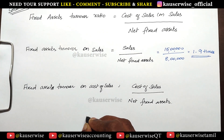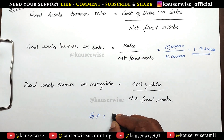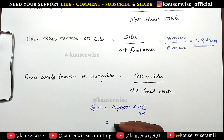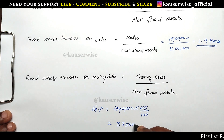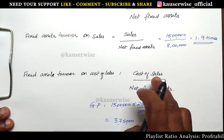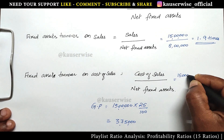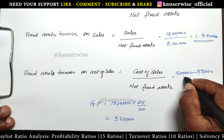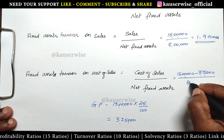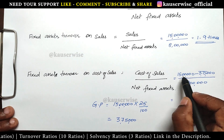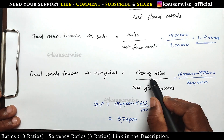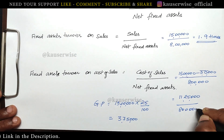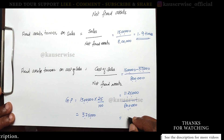Calculate gross profit: sales 15 lakhs multiplied by GP ratio 25% equals 3,75,000. This is the gross profit. Now: 15 lakhs minus 3,75,000 (GP) divided by net fixed asset of 8 lakhs. Cost of sales is 11,25,000 divided by 8 lakhs. The answer is 1.4 times.